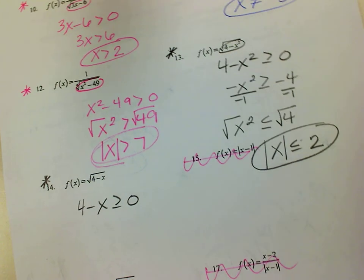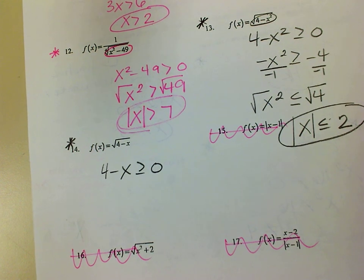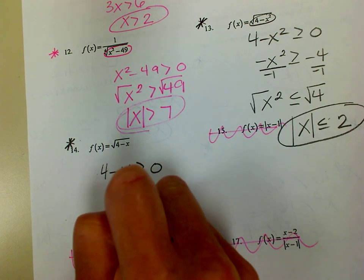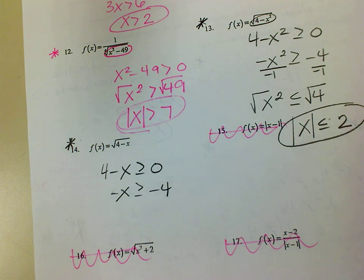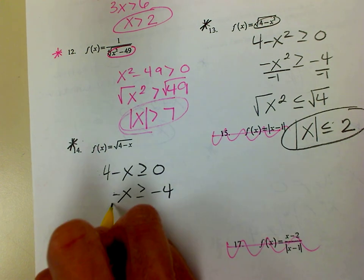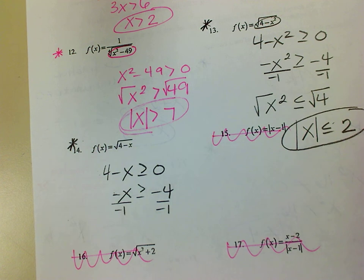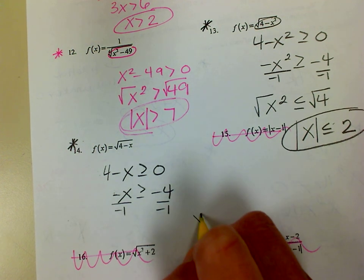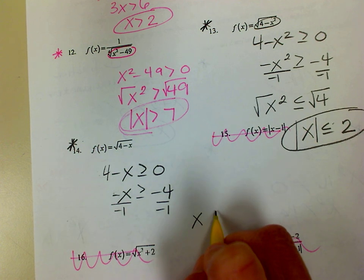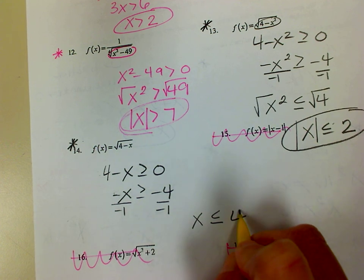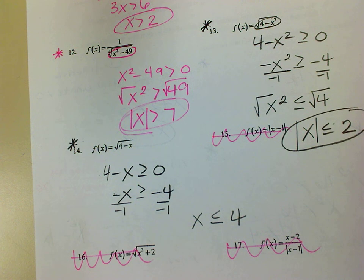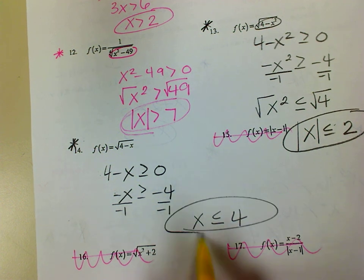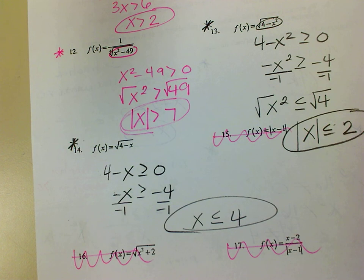Finally, number 14. I've got to get x by itself, so I subtract over the 4. I need a positive x, so I divide by negative 1. Whenever I multiply or divide by a negative, everything changes including my inequality. So positive x flips to less than or equal to positive 4. I don't have an x squared, so that's just my final answer. And now you can do the homework — it goes right along with the notes.